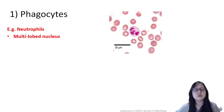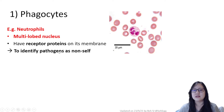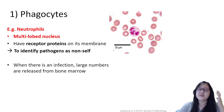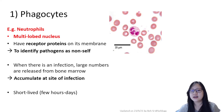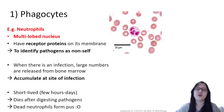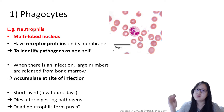Neutrophils have a multi-lobe nucleus and receptor proteins that differentiate self from non-self. They can identify pathogens as non-self, and when there is an infection, large numbers of neutrophils are released from the bone marrow and accumulate at the site of infection. They are short-lived — they engulf the pathogen and then die, forming pus. Dead neutrophils are what make up that yellow sticky fluid in a pimple.